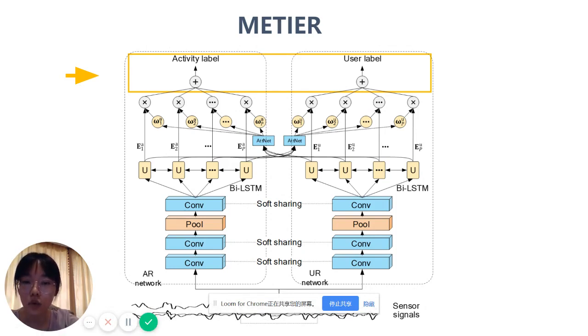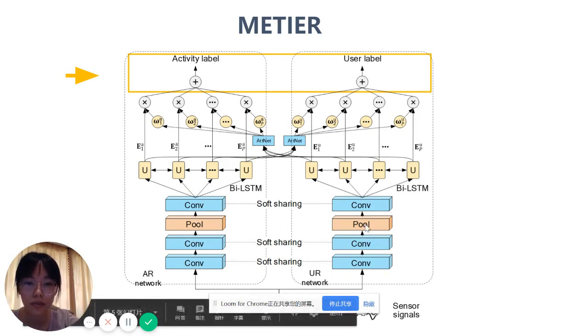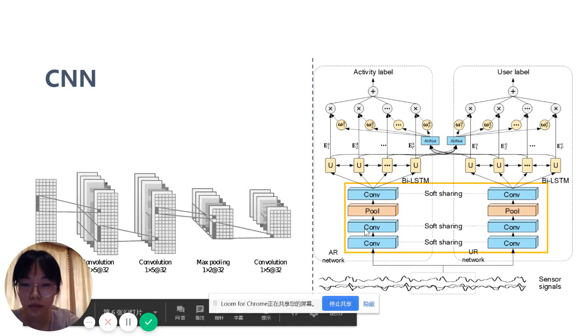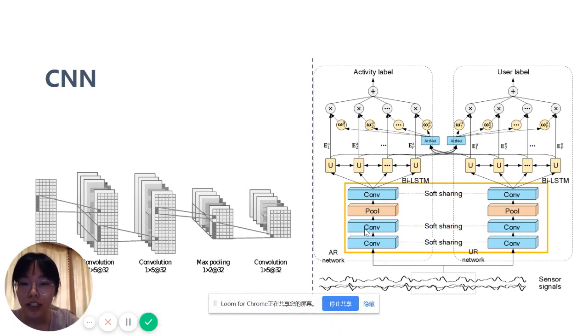Next, I will describe the network structure in more detail. Specifically, the time window is transformed through two convolutional layers, one max pooling layer, and then one more convolutional layer in the convolutional neural network.